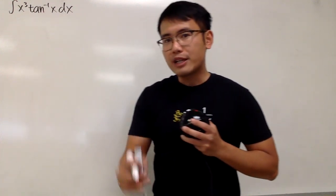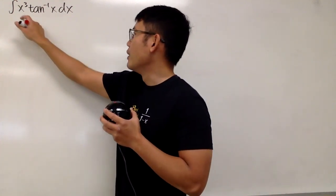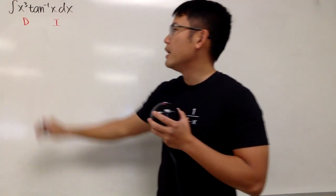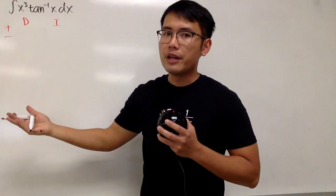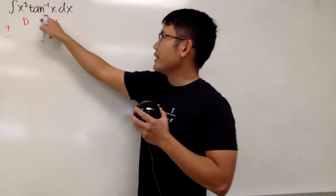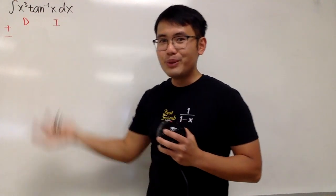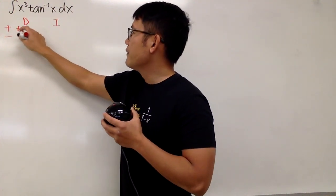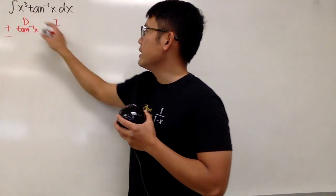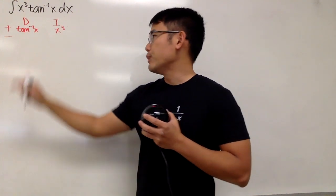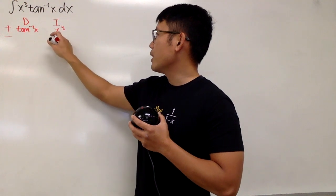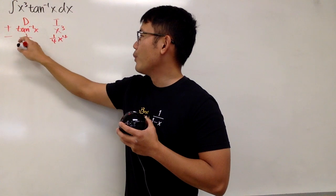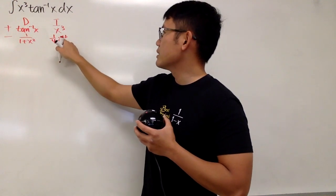To integrate this, we will use the DI method, namely integration by parts. So let's go ahead and pick something to be differentiated and something else to be integrated. I don't want to integrate inverse tangent because to do that we would have to do integration by parts again. So let me differentiate inverse tangent and integrate x to the third power. When we integrate x³ we get 1/4 x to the fourth power. When we differentiate arctan(x), we get 1 over 1 plus x squared.